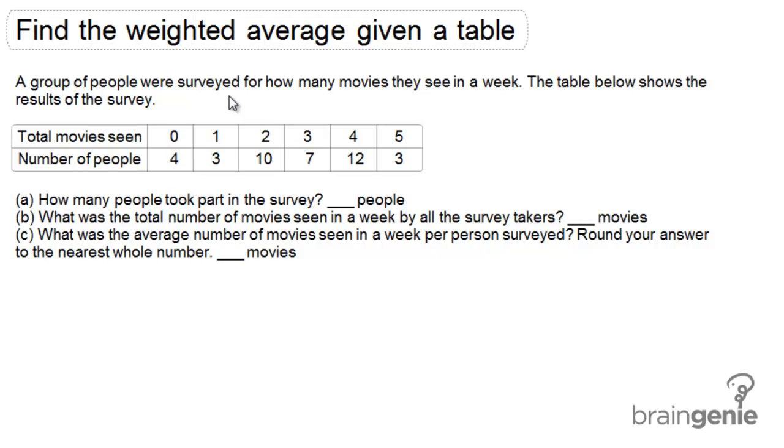Find the weighted average given a table. A group of people were surveyed for how many movies they see in a week. The table below shows the results of the survey. What you're seeing in this table is the people that were surveyed broken down by the total number of movies they see in a week.